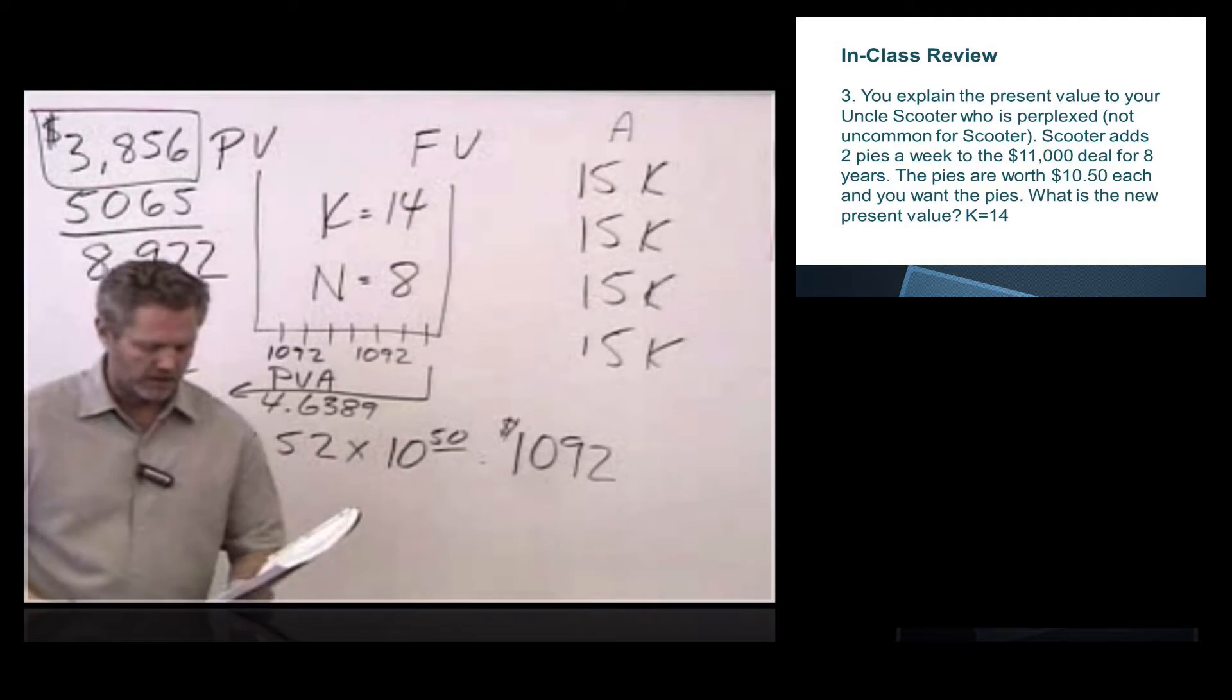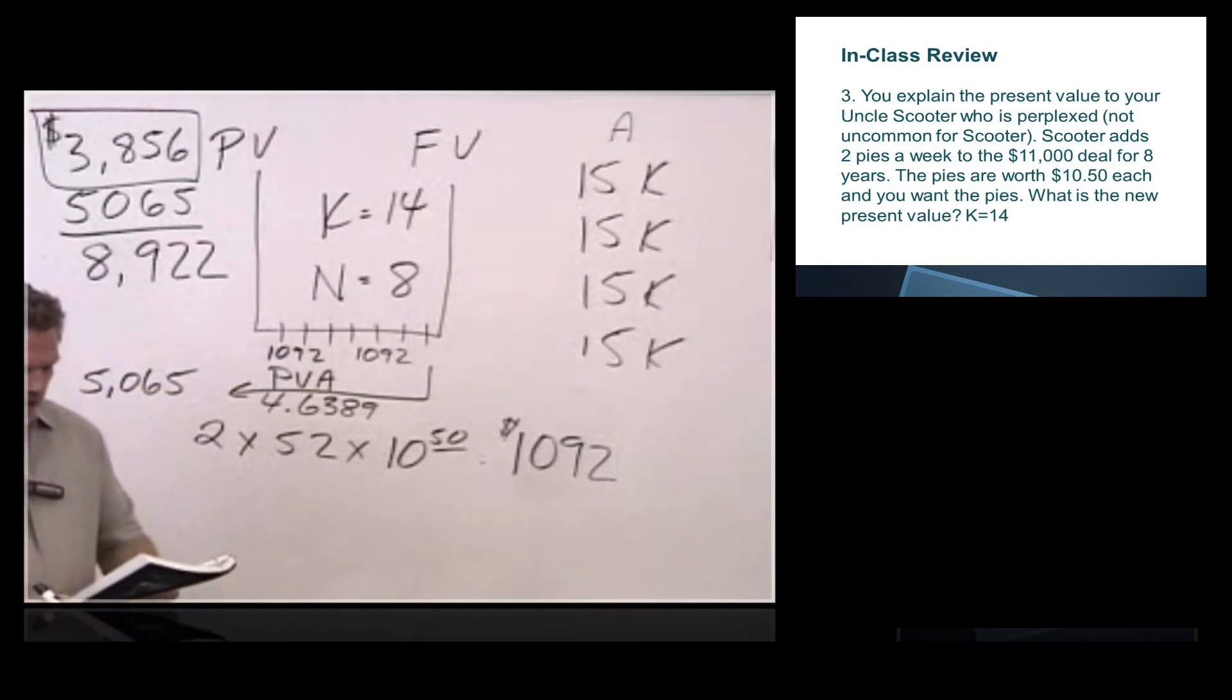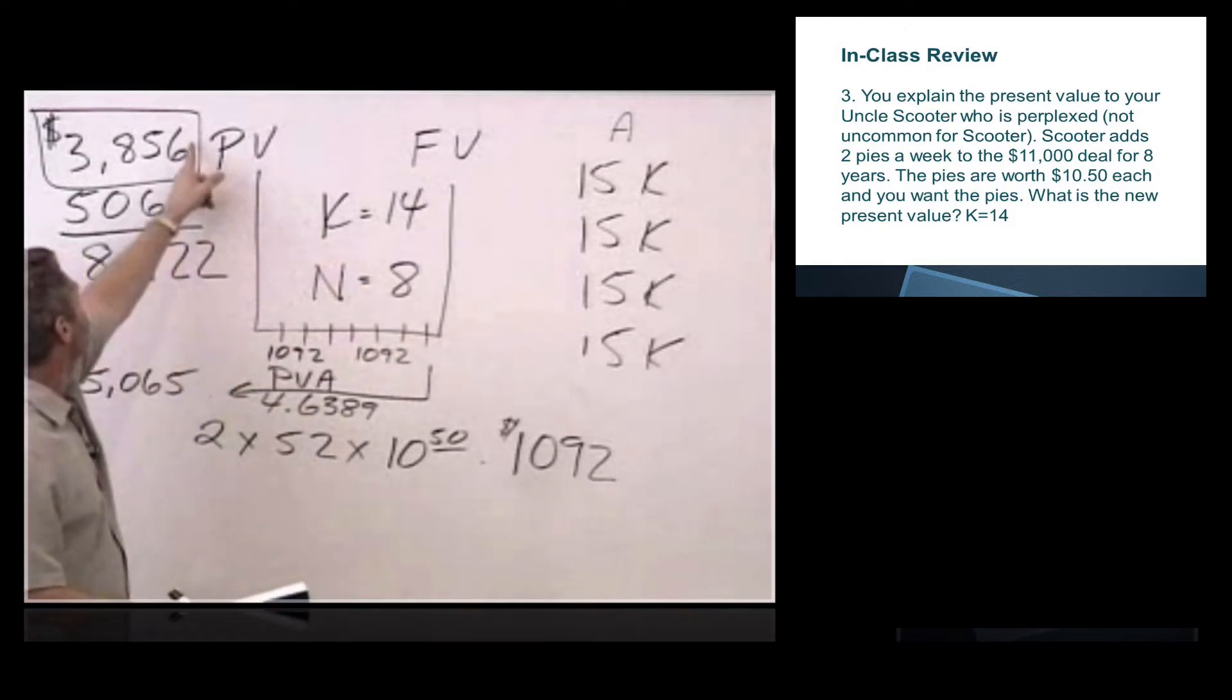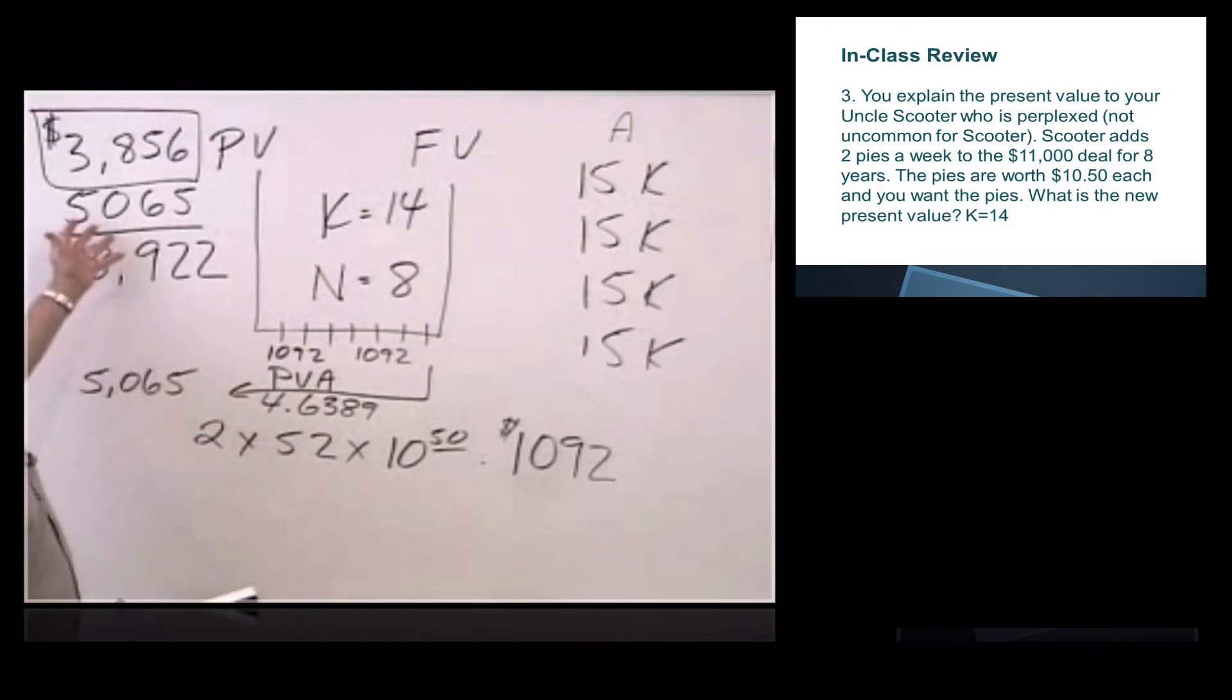We add that together, and we get a total value of 8,922 plus some change. Not that really big deal about the change. And so the question here is, do we want to do this deal? And now the deal is still no. We do not want to do this deal because I'm not going to trade $15,000 for $11,000 in the future worth 3,800 today plus a whole bunch of pies that's worth 5,065 for a total value of 8,922. We'd be losing money.